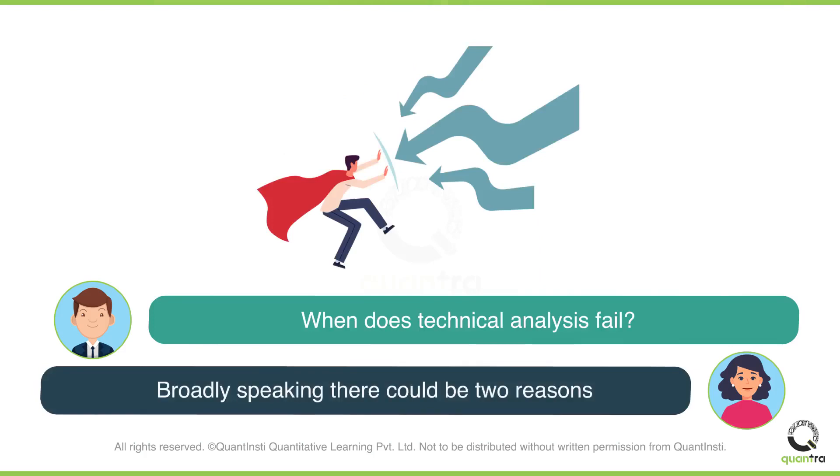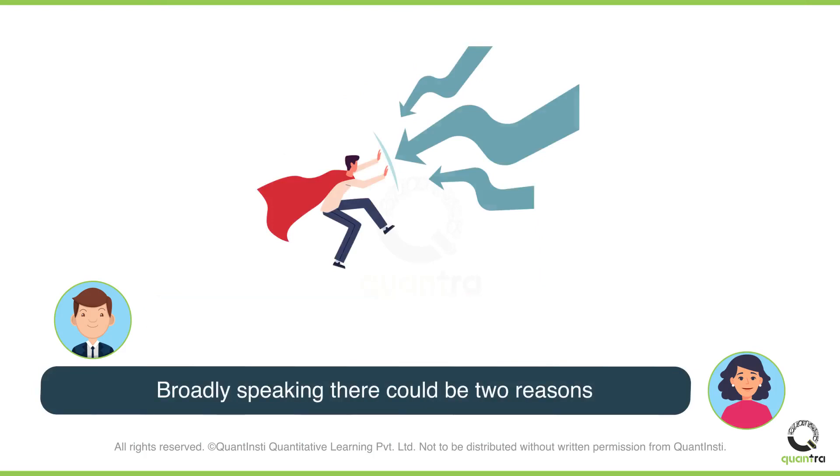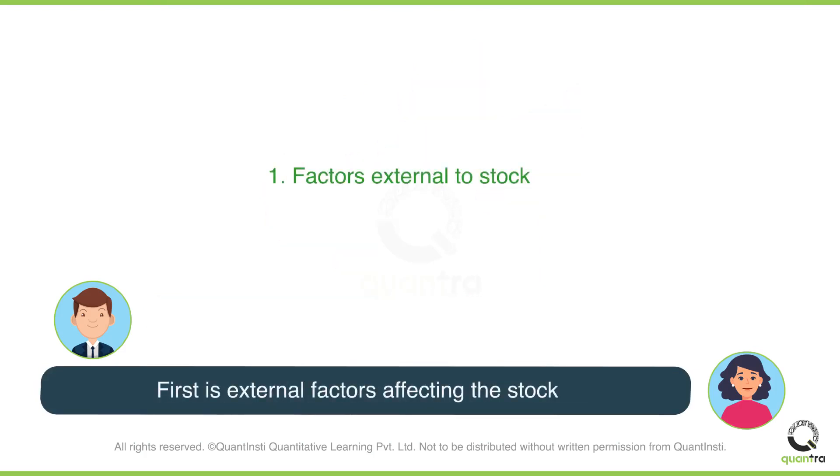Broadly speaking, there are two reasons why technical analysis fails. The first is the external factors which affect the stock.